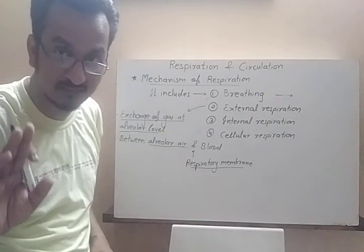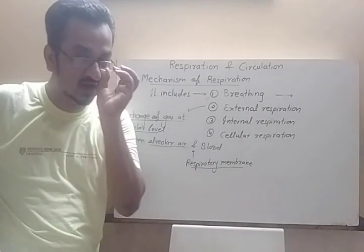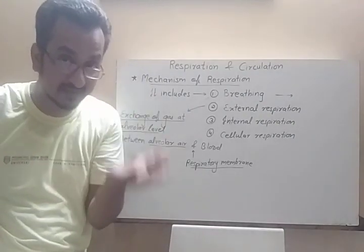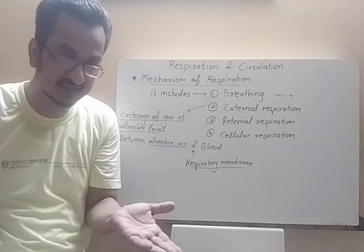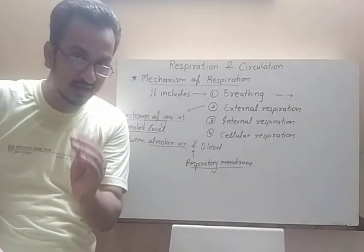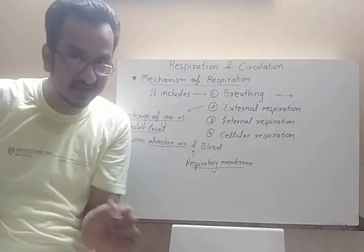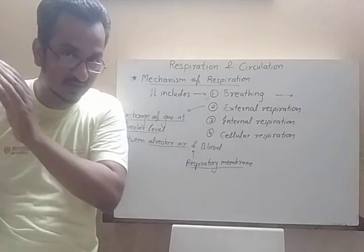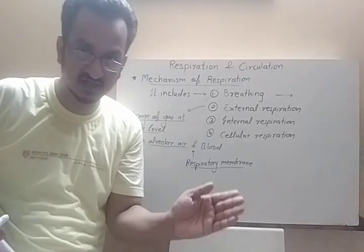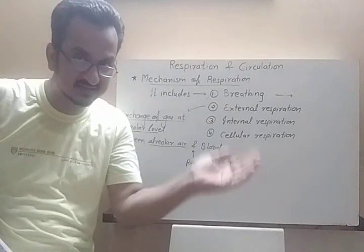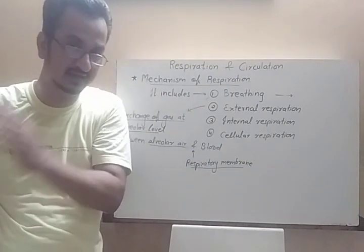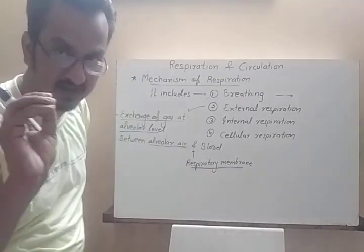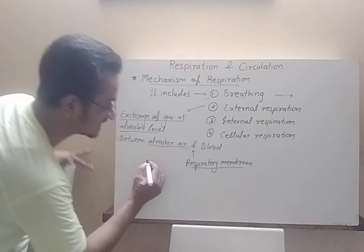In the case of humans, our alveoli have blood — specifically capillaries — present outside them. The barrier between the alveoli and the blood in those capillaries is called the respiratory membrane. Through this membrane, oxygen diffuses into the blood and carbon dioxide diffuses from the blood into the alveoli.